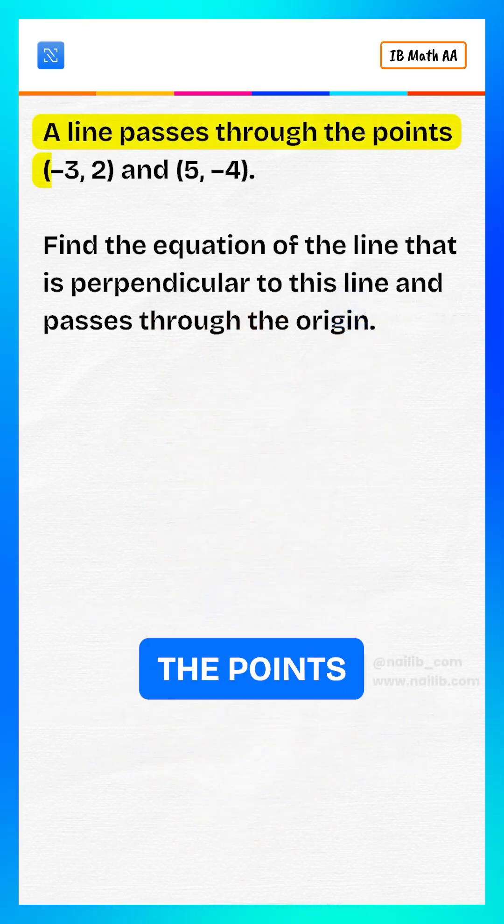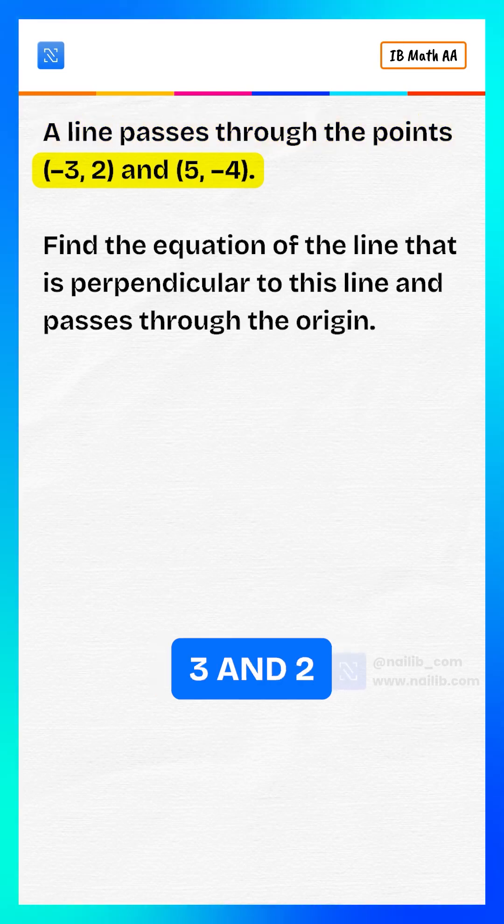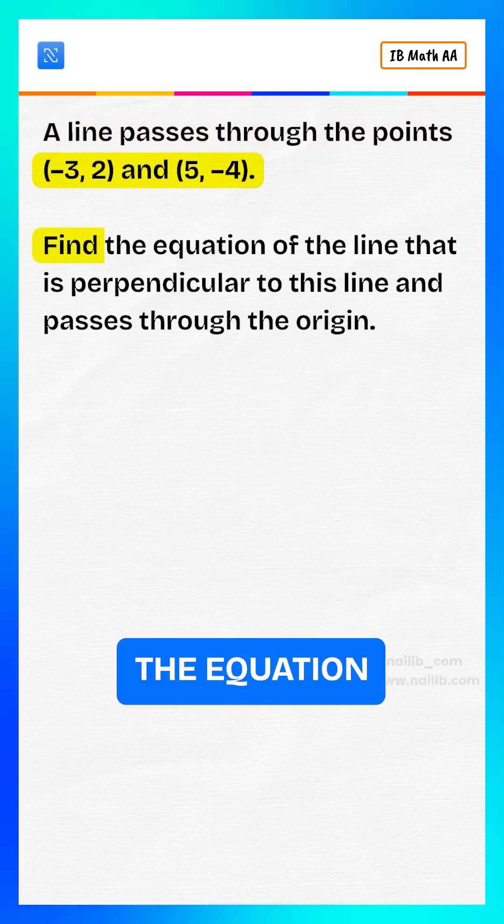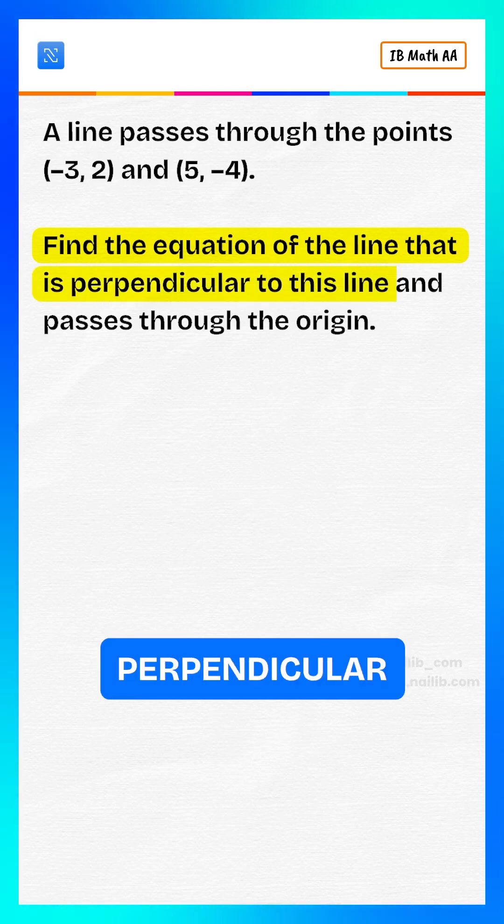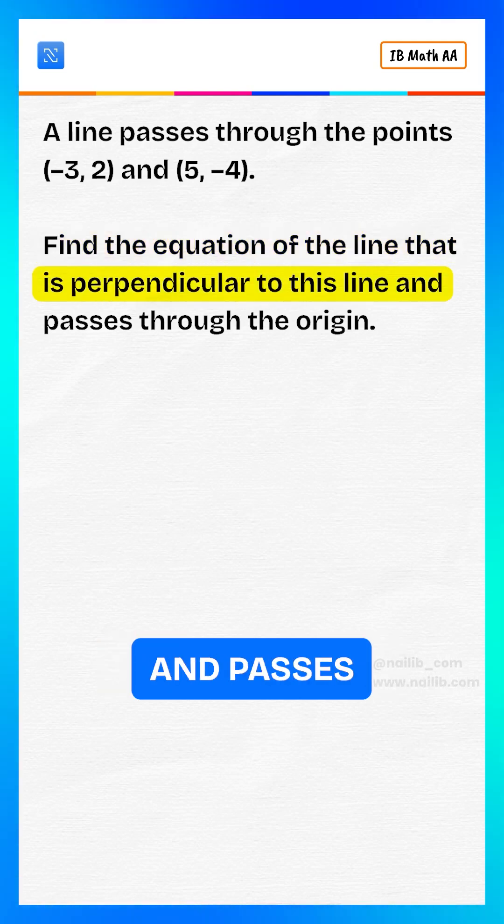A line passes through the points negative 3 and 2 and 5 and negative 4. Find the equation of the line that is perpendicular to this line and passes through the origin.